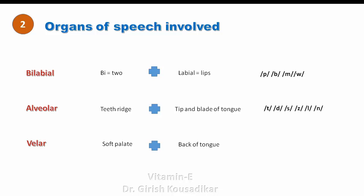Velar sounds include /k/, /g/, and /ŋ/. When you try to pronounce these sounds, you will find that the back of the tongue is raised and it touches the soft palate. The soft palate is the part just behind the uvula, and the back of the tongue raises and touches it in the production of sounds like /k/, /g/, and /ŋ/.